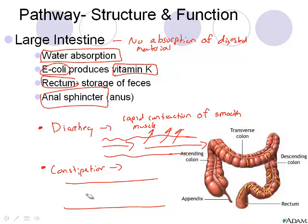Constipation is a little different. Fiber in our diet holds on to water, so if we don't have enough fiber, that water isn't being held and more of it gets absorbed into our system. Less water remains in our large intestine and rectum, causing the material to dry out — which is what makes it painful and leads to constipation.